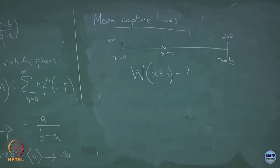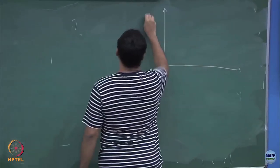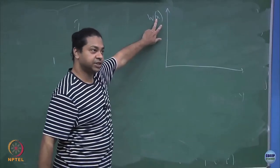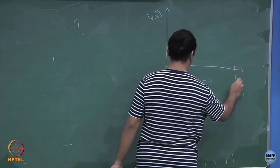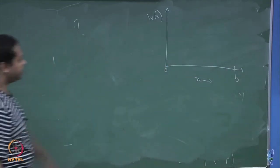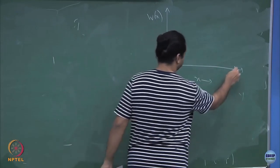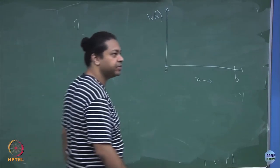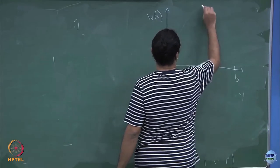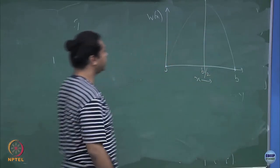Before I calculate, maybe you can tell me what the answer will be. If I wanted to plot w of x — where x is the starting position where I have released the particle — on the x-axis between 0 and b: if I release the particle at 0, how long will it take? Zero time. If I release it at b? Again zero time. Where will it take maximum time? At b over 2. So I expect the curve to look something like this, with a maximum at b by 2.